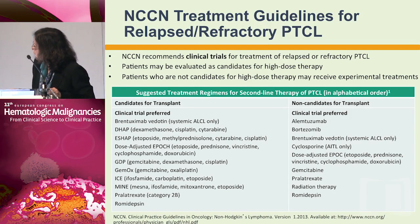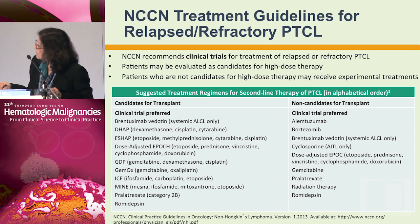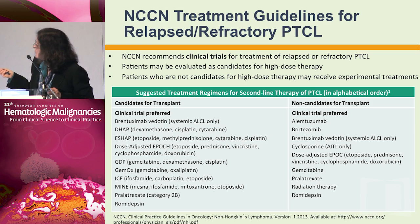Flipping now to the relapsed and refractory setting, the NCCN guidelines recommend considering whether a patient is a transplant candidate. If they are, there are a number of different choices including combination chemotherapy regimens as well as active single agent regimens. If not a transplant candidate, most recommendations favor single agent therapies, trying not to expose patients to very aggressive cytotoxic regimens if there's no endpoint for a cure.